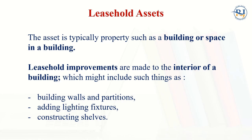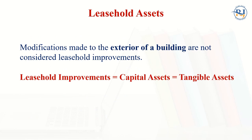Now, what is a leasehold asset? The asset is typically property such as a building or a space in a building, but it is different from leasehold improvements. Leasehold improvements are made to the interior of the building, which might include things like building walls, partitions, adding lighting, fixtures, and constructing shelves. Modifications made to the exterior of the building are not considered leasehold improvements. Leasehold improvement is equal to a capital asset and is also known as a tangible asset.